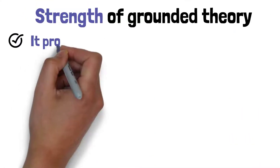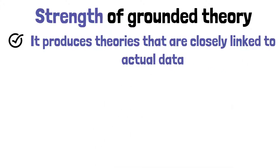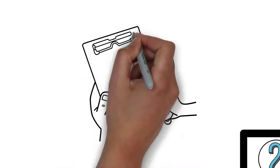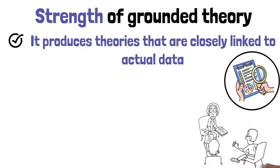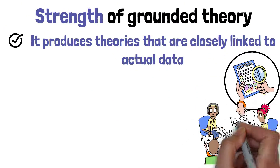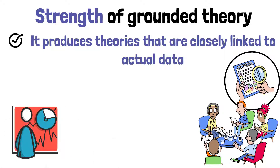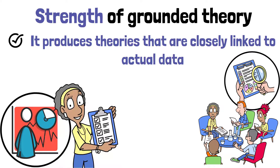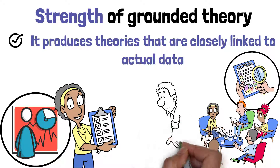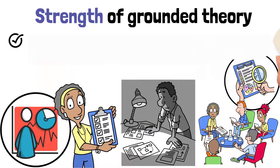One major strength of grounded theory is that it produces theories that are closely linked to actual data, making the findings more realistic and applicable to real-world situations. Because the method relies on the data collected directly from participants, the resulting theories often provide valuable insights that can be used to create effective solutions or inform future research. The method is also flexible, allowing researchers to adapt their approach as new themes or patterns emerge during the study.